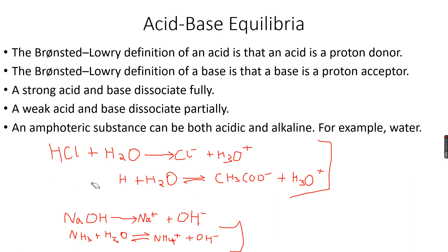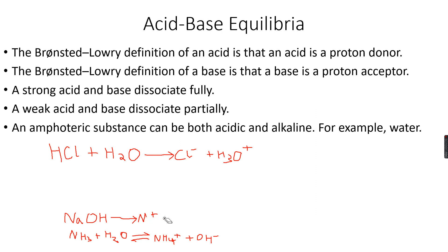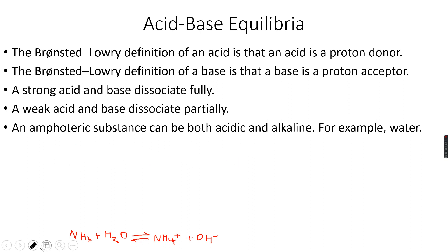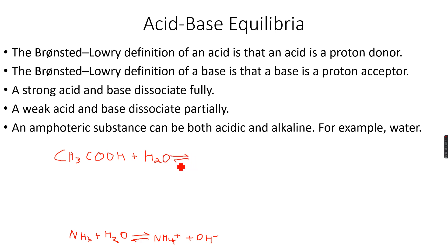Now I'm going to erase all of this apart from the first and last reactions, because we are going to look at conjugate acid-base pairs. Let me take the example of ethanoic acid: CH3COOH plus H2O in a reversible reaction gives CH3COO-.